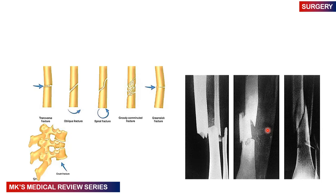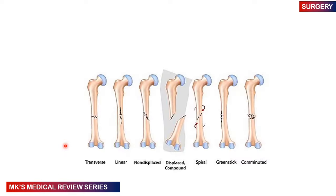Here are other different types of patterns: a transverse fracture, an oblique fracture, a spiral fracture, a grossly comminuted fracture, and a greenstick fracture. Here is an example of a segmental fracture — two fracture lines and three segments. There may also be crash fractures happening in the vertebrae. To emphasize: a transverse fracture may be a linear non-displaced fracture; a displaced compound fracture is sticking out of the leg; and there are spiral, greenstick, and comminuted types.